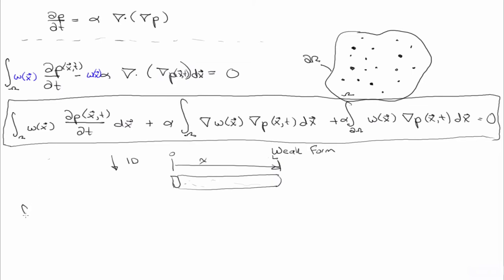So in one dimension, this equation then reduces. Now the integral over the domain is just in one dimension, so it's 0 to L. W of x, now x is just a scalar because it's just one dimension.